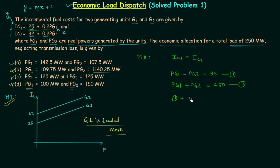Equation 1 plus equation 2 will give us twice of PG1 equal to 285. So PG1 is equal to 142.5 MW. I will put this value in equation number 2 and it will give me PG2 equal to 107.5 MW. So this is the answer.